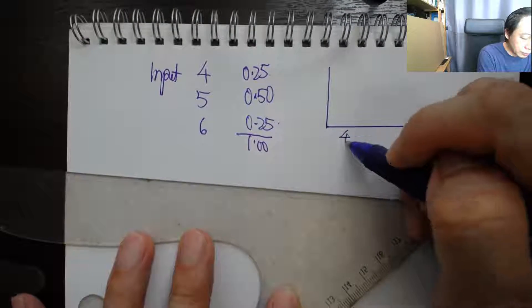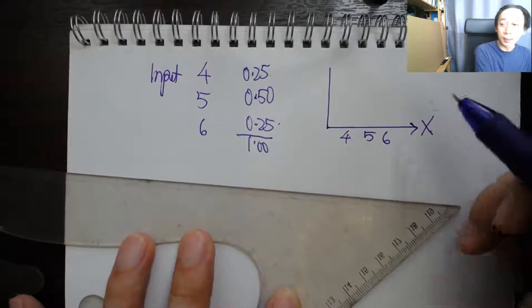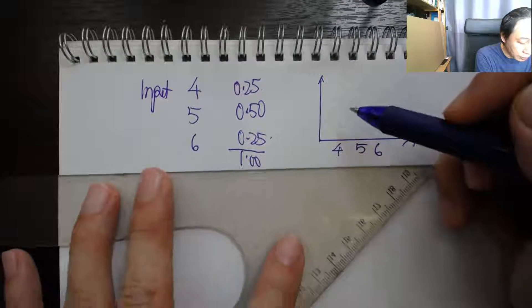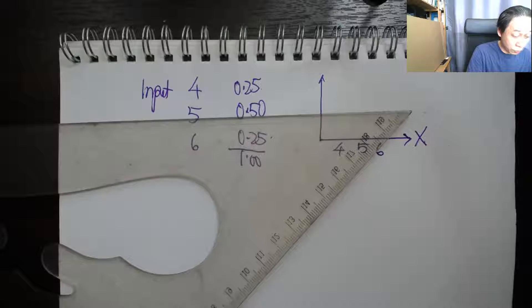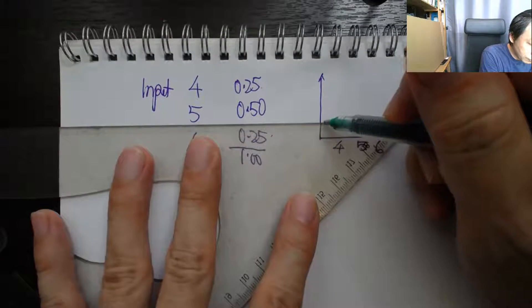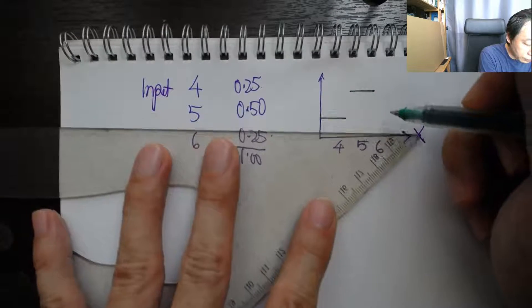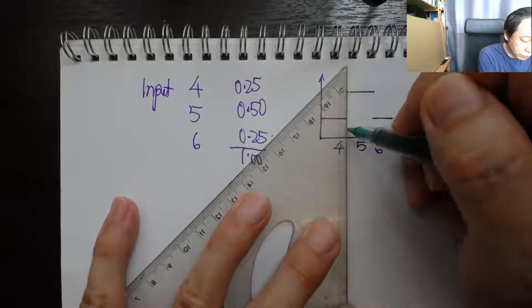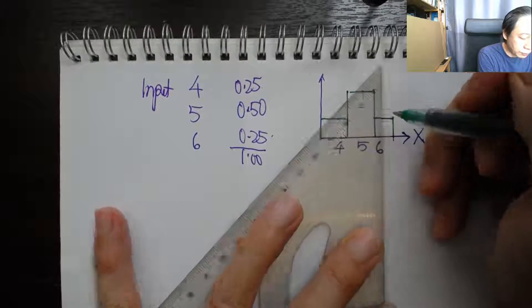Before that, let me just show that as a probability distribution. This is my X. My X can only have values four, five, and six, and the probabilities are basically 0.25, 0.5, and 0.25. The heights will show the probabilities.